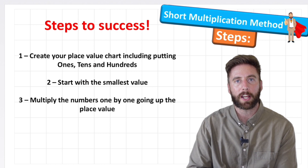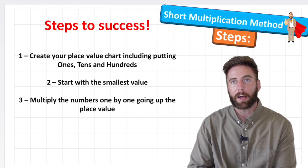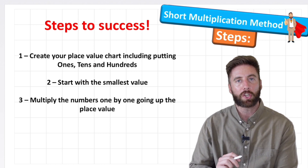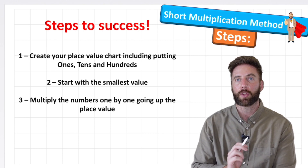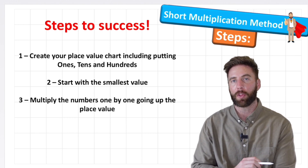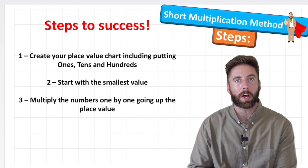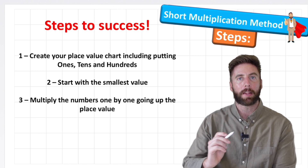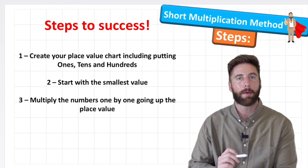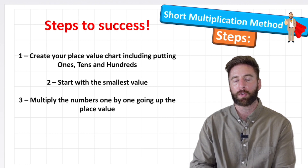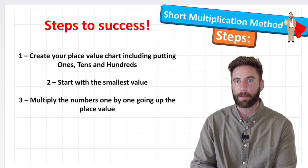So let's look at our steps of success. First, we're going to create our place value chart and make sure we include our ones, tens and hundreds so that we don't put a number in the wrong column. Then we're going to start with our smallest value and multiply it by the smallest value in the other number, and then we're just going to multiply up the place value. You're going to see what that means in a minute.